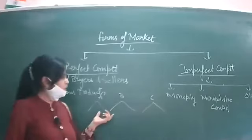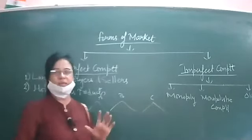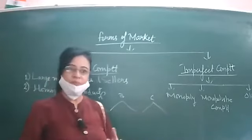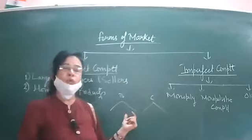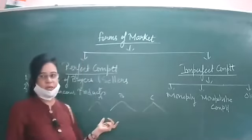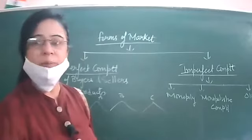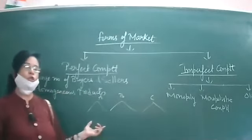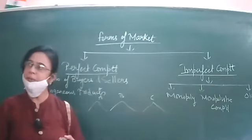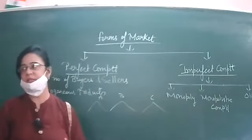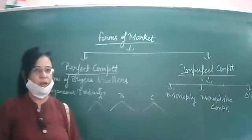Their product is identical in all respects, which means there exists perfect competition in the wheat market. Another characteristic of the wheat market is that because they are dealing in homogeneous products, they sell their product at the same price. So let us discuss these features one by one.